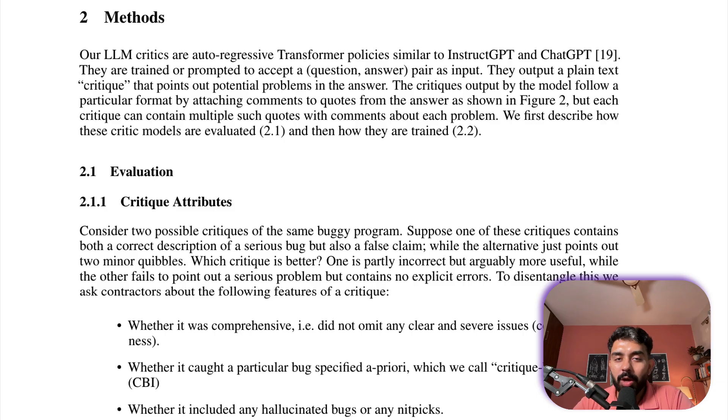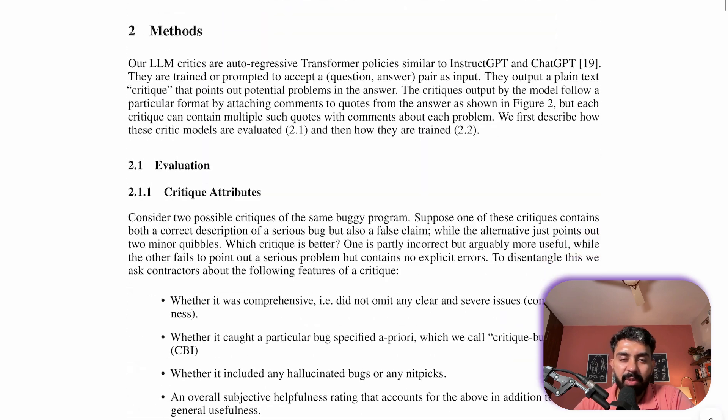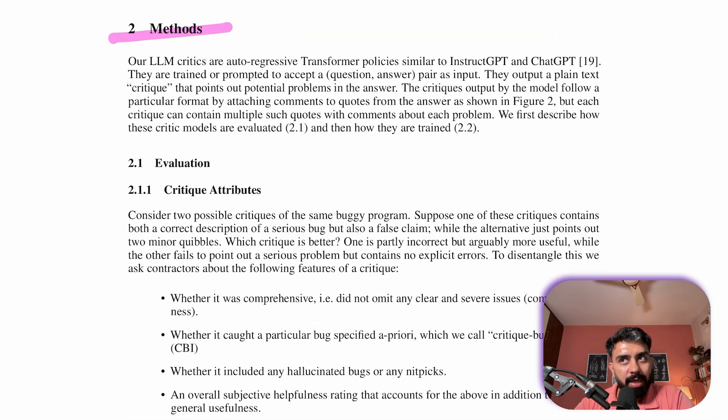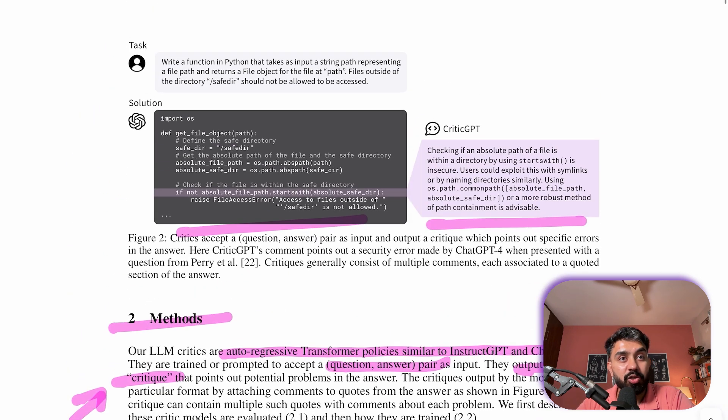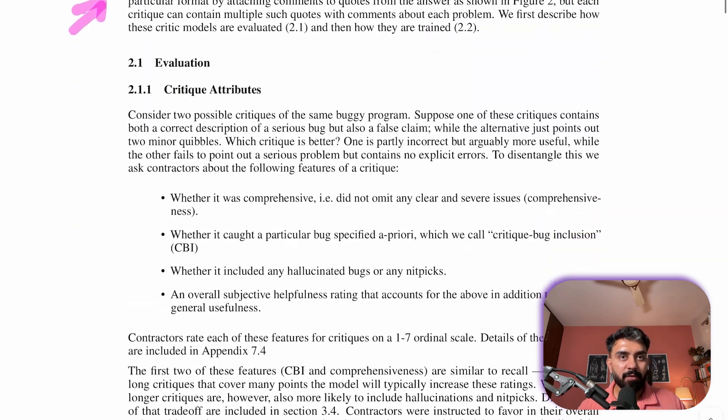Now let's talk about the methods that have been incorporated in order to train this model. The LLM critics are basically auto-regressive transformer models similar to your ChatGPT. They take question answer pair as input and generate a text critique which highlights the potential problems. Now the critiques include comments attached to specific quotes from the answer.